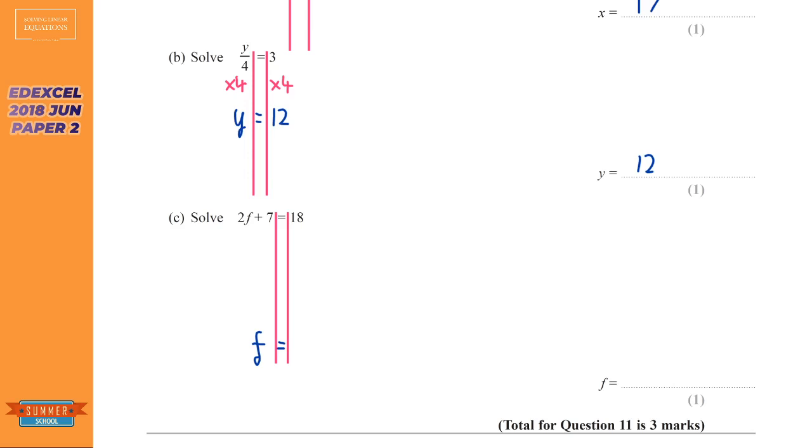It's kind of like the opposite of BIDMAS. You get rid of the plus minus first. So we've got a plus 7, we want to get rid of that, so we're going to take away 7. And we have to do it to both sides. Now we're left with 2f on the left-hand side. We haven't dealt with that 2 yet. And on the right-hand side, we've got 11.